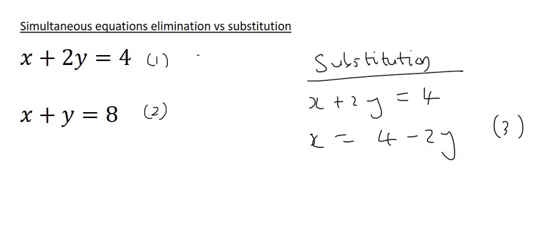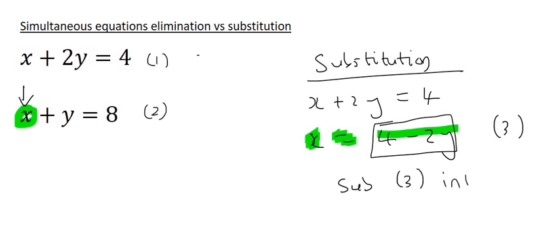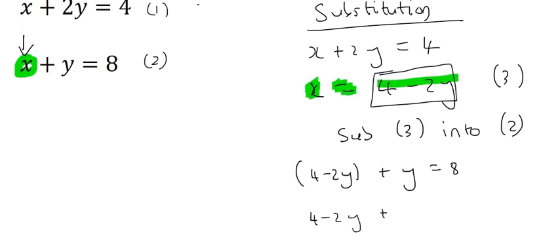Then we can go to the equation that we haven't used, and wherever we see x, we will replace it with that. Because it's telling us that x is equal to four minus 2y, so we can replace this x with four minus 2y. I'm going to substitute equation number three into equation number two. In brackets, wherever I see x, I will replace it with four minus 2y, and then I can just solve for y.